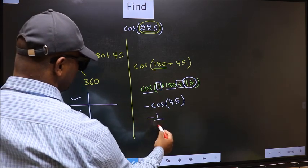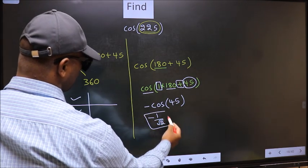So negative cos 45 is negative 1 by root 2. This is our answer.